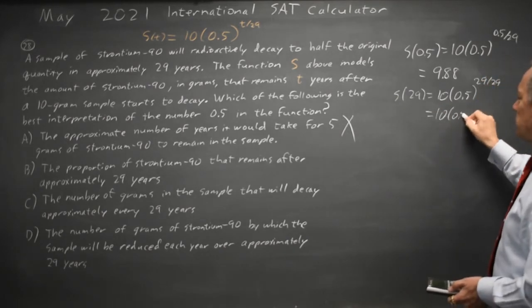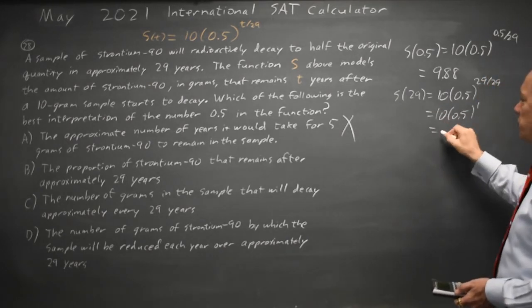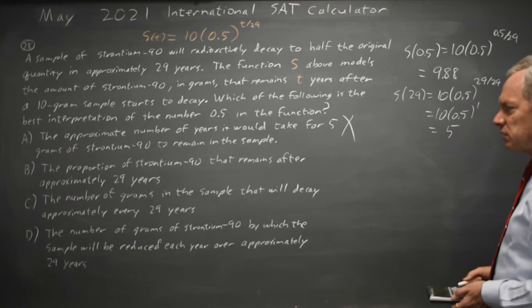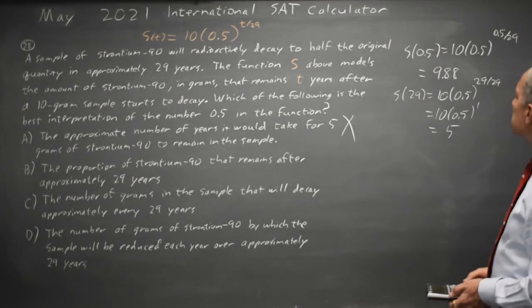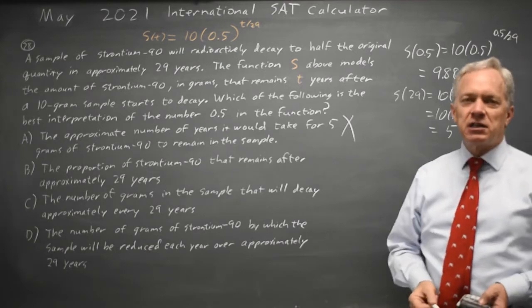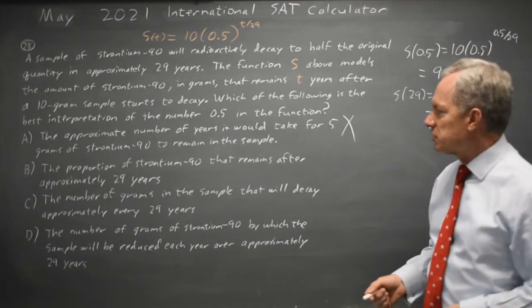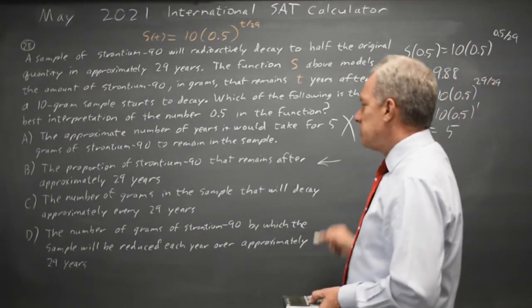That's 10 times 0.5 to the 1, which is 10 times 0.5, equals 5. After 29 years, I start with 10, end with 5, and that is 0.5. That is the proportion that remains, so choice B could be correct.